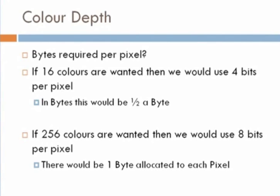Now, color depth is in terms of bytes required per pixel. So if we use 16 colors, this reminds me of the first computers that I worked with. If it was 4 bits per pixel, that would be basically half a byte. 2 to the power of 4 is 16. So in terms of bytes, if we've got 16 colors, we call that 1 nibble.